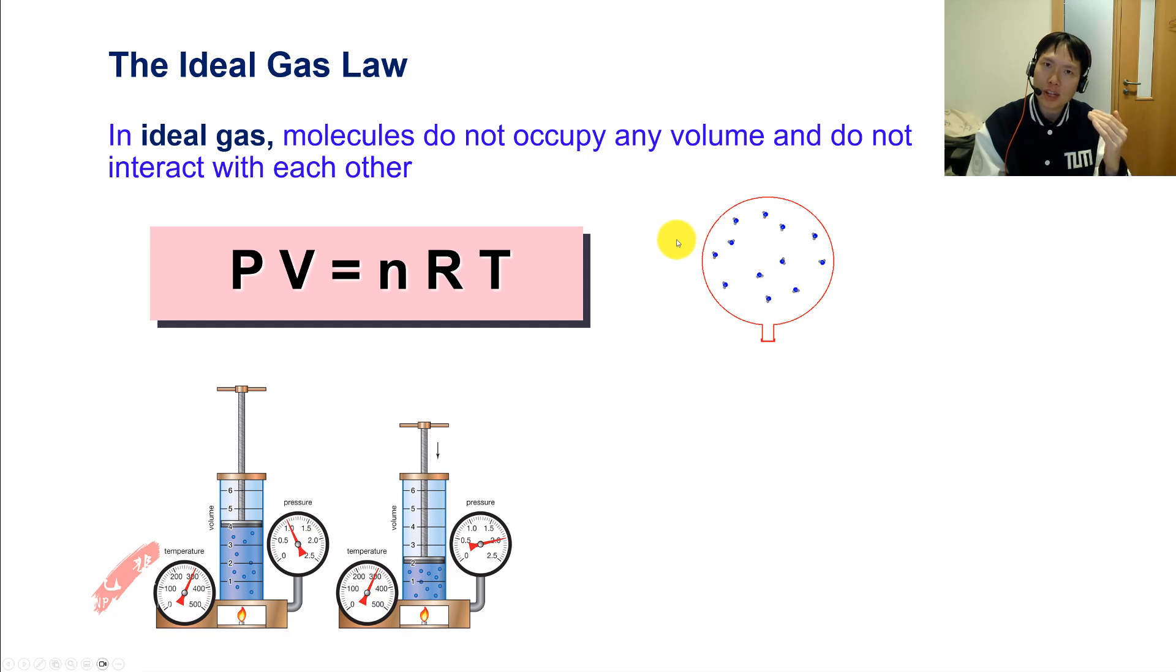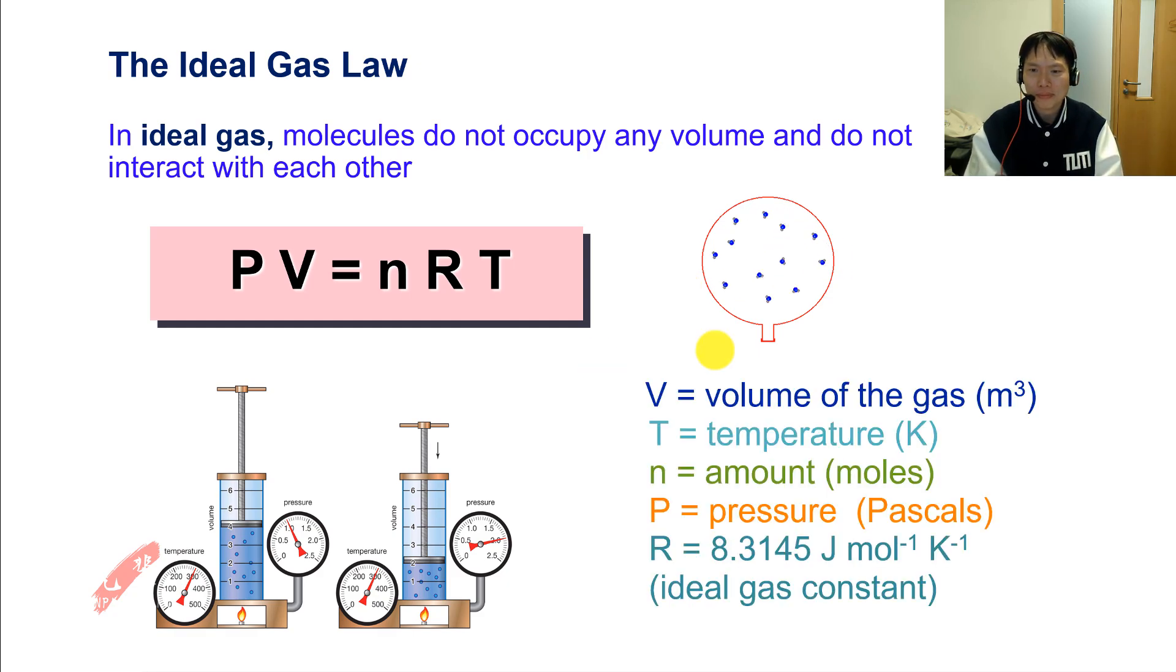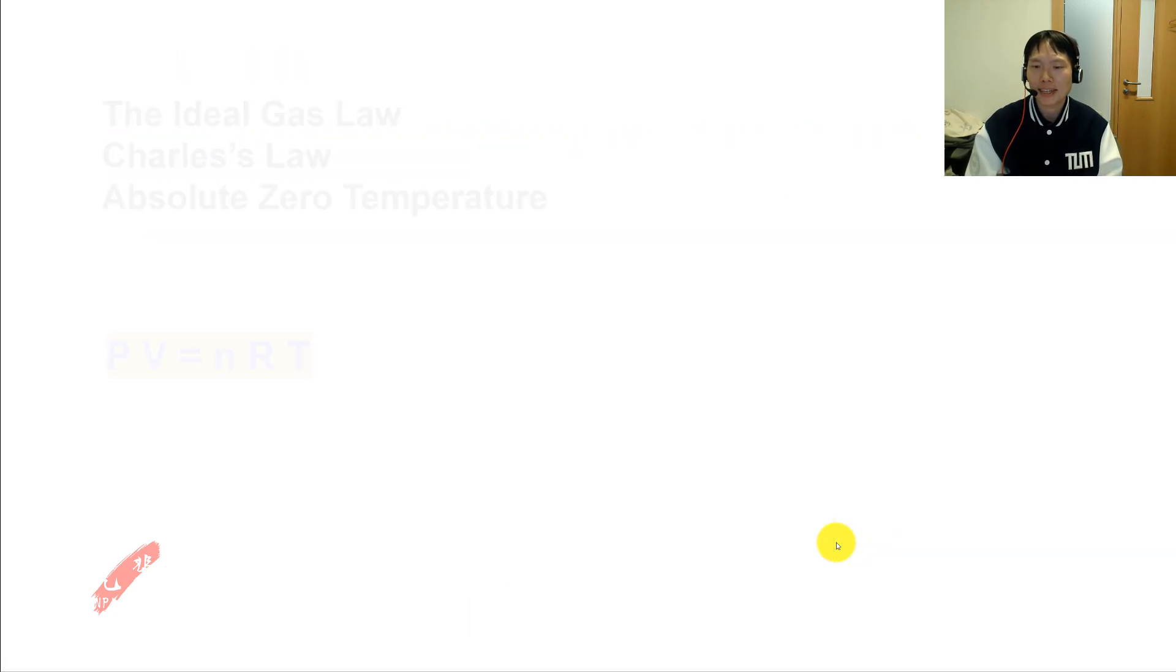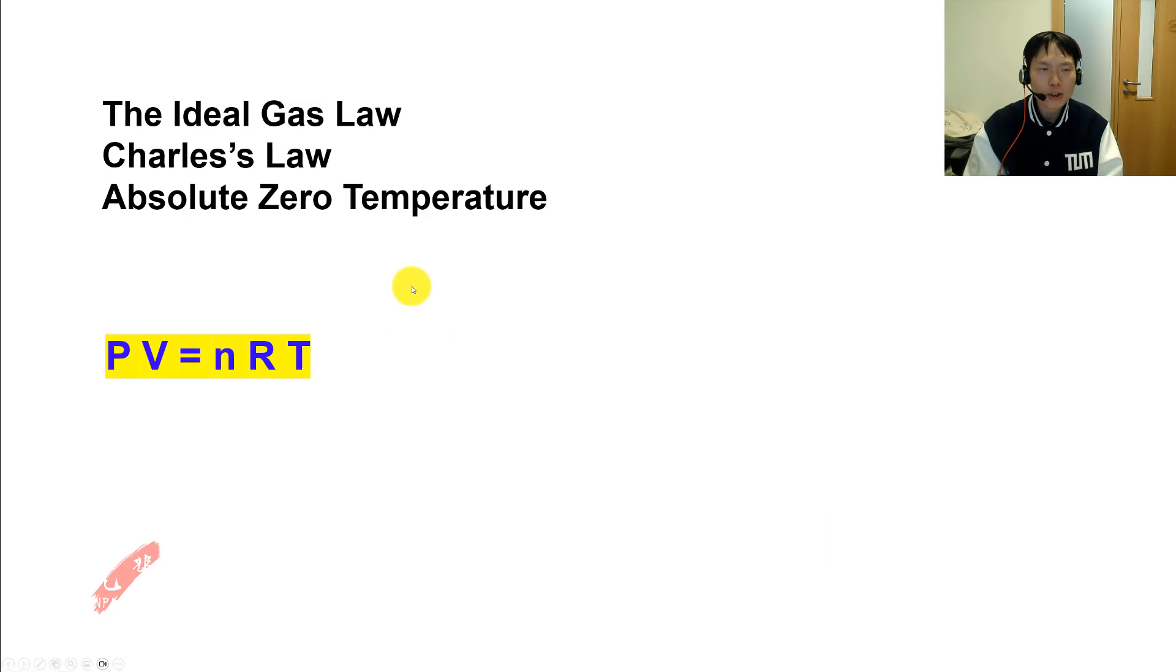In this equation, to plug the values in, make sure you have the right units: volume in meters cubed, temperature in Kelvin, n is the number of moles, and pressure is in Pascals. R is the ideal gas constant, 8.3145 joules per mole per Kelvin. The unit tells you clues about what it means—it's a measure of energy.